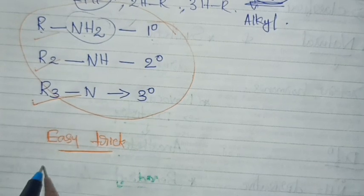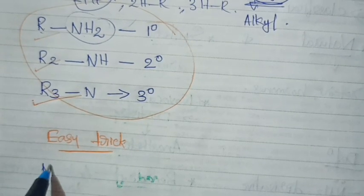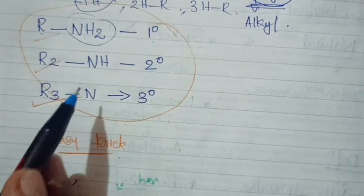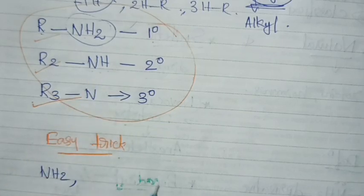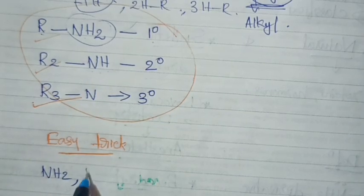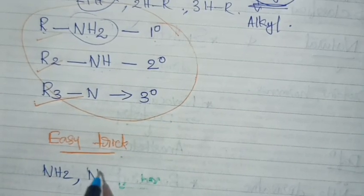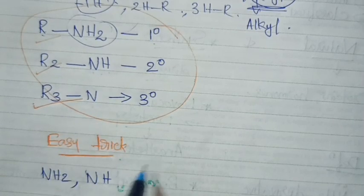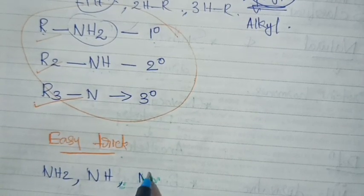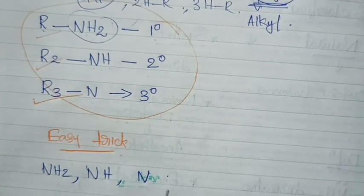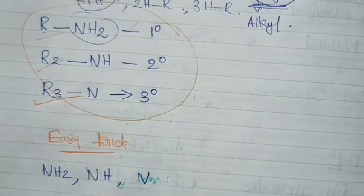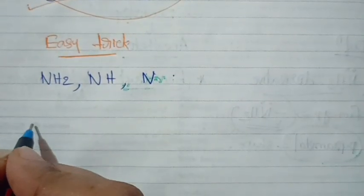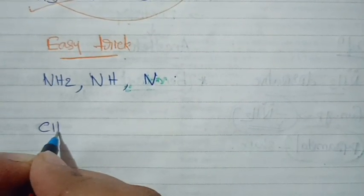If an amine contains NH2, regardless of the R group, it is a primary amine. If it contains NH, it is secondary. If it contains just N, that is the tertiary amine. So let's see some examples.